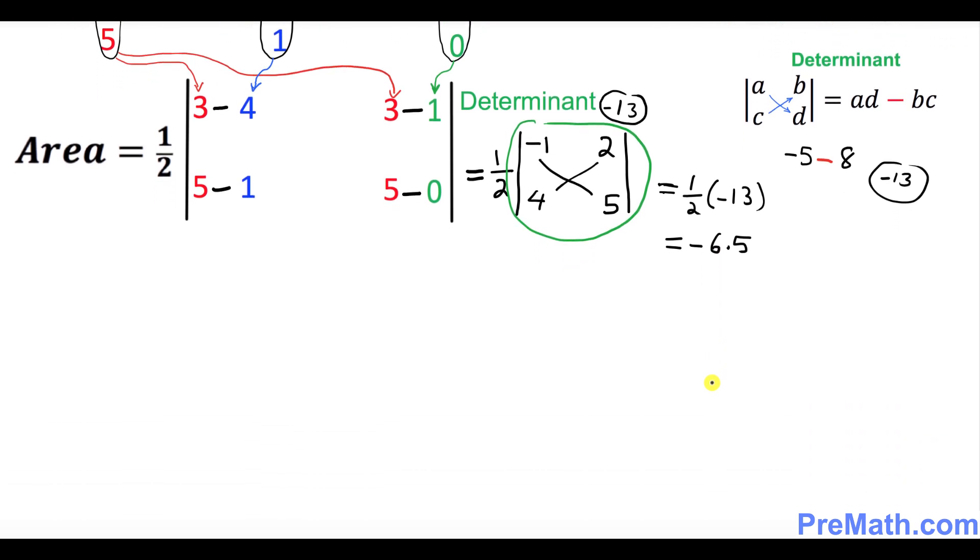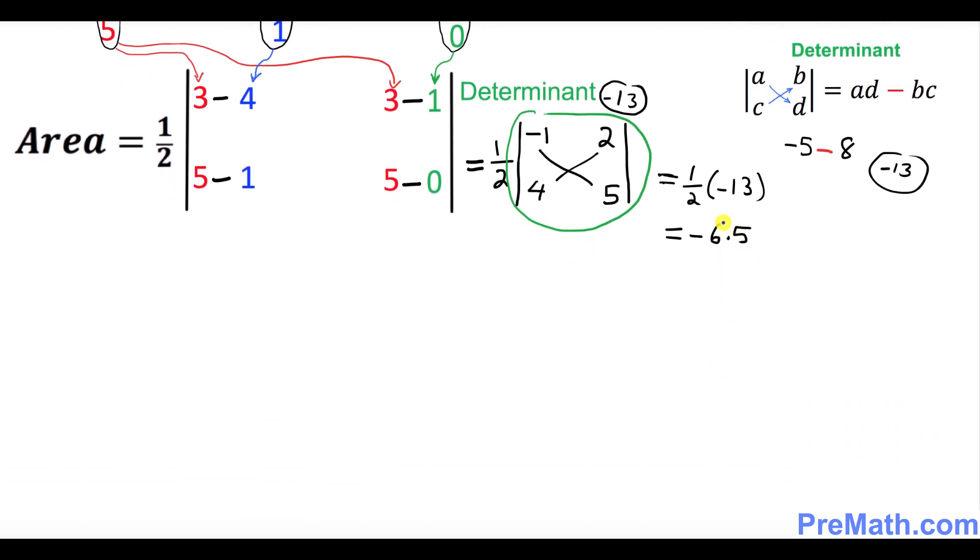And as you can see over here this is a negative number and we must always make it a positive because area is always positive. Thus the area of the triangle turns out to be 6.5 square units.